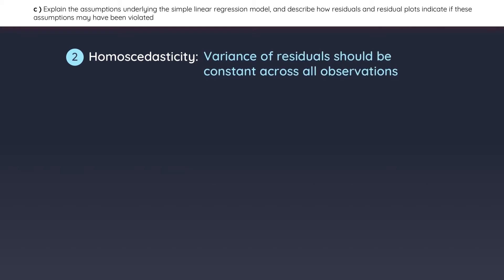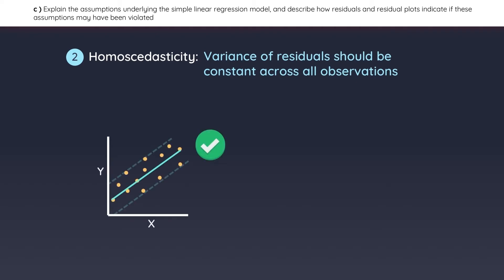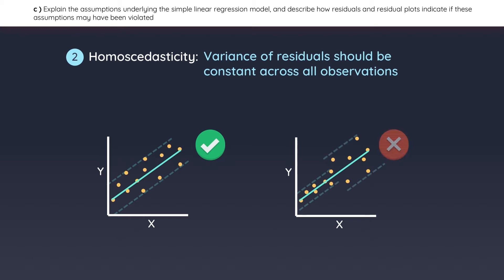The second assumption is homoscedasticity, which states that the variance of the residuals should be constant across all observations. If you look at this graph, the variance of the residuals is constant throughout the entire range of X values. In another example, however, the variation is smaller at first and then it increases, which is a violation of the second assumption.